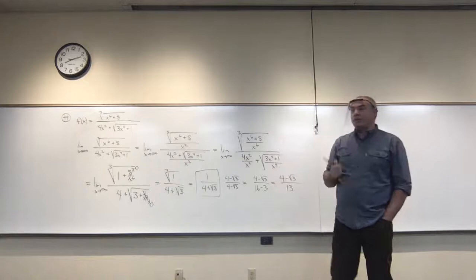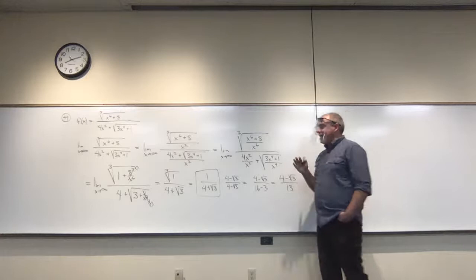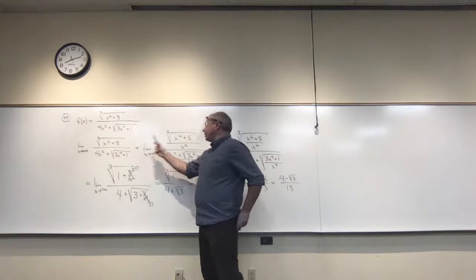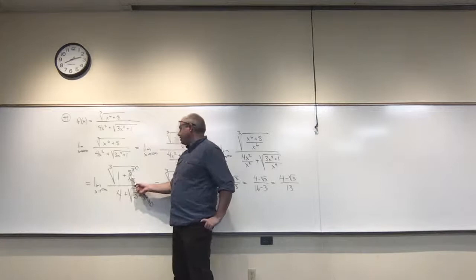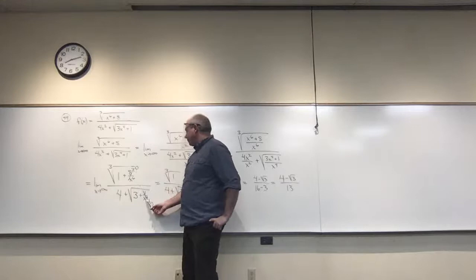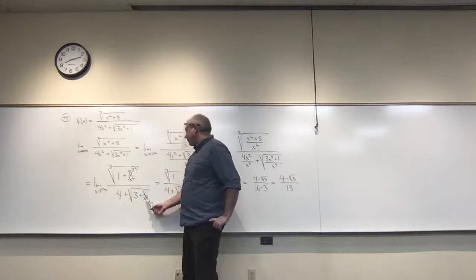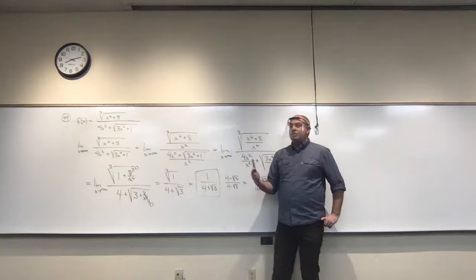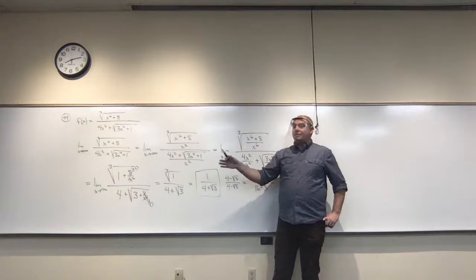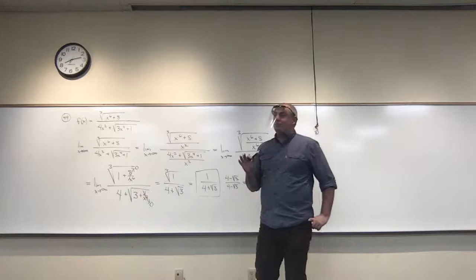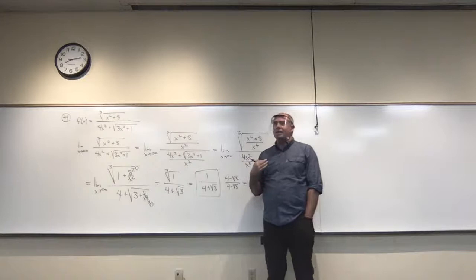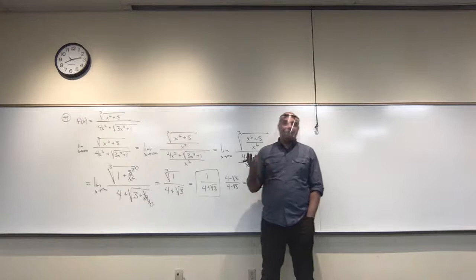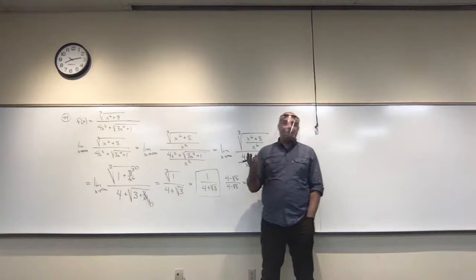If you did it with x going to minus infinity, the only thing that changes is when we ask what happens to 8 over something really large and negative — it still goes to zero. And 1 over something really large also goes to zero, so you get the exact same result. For any rational function or something like this, you really only need to take the limit as x goes to infinity and ask whether anything really changes going to negative infinity.